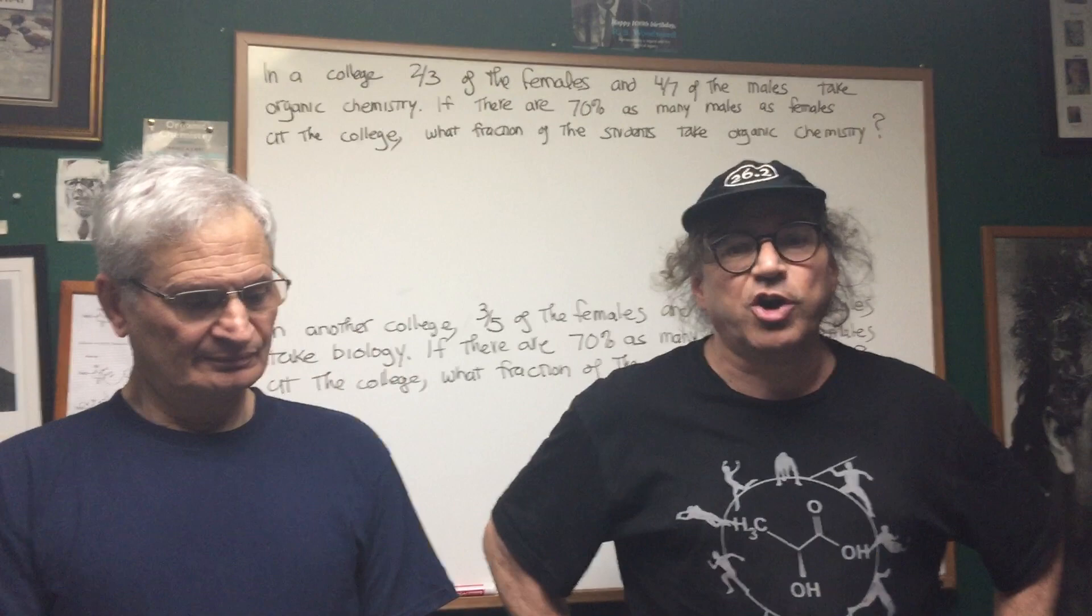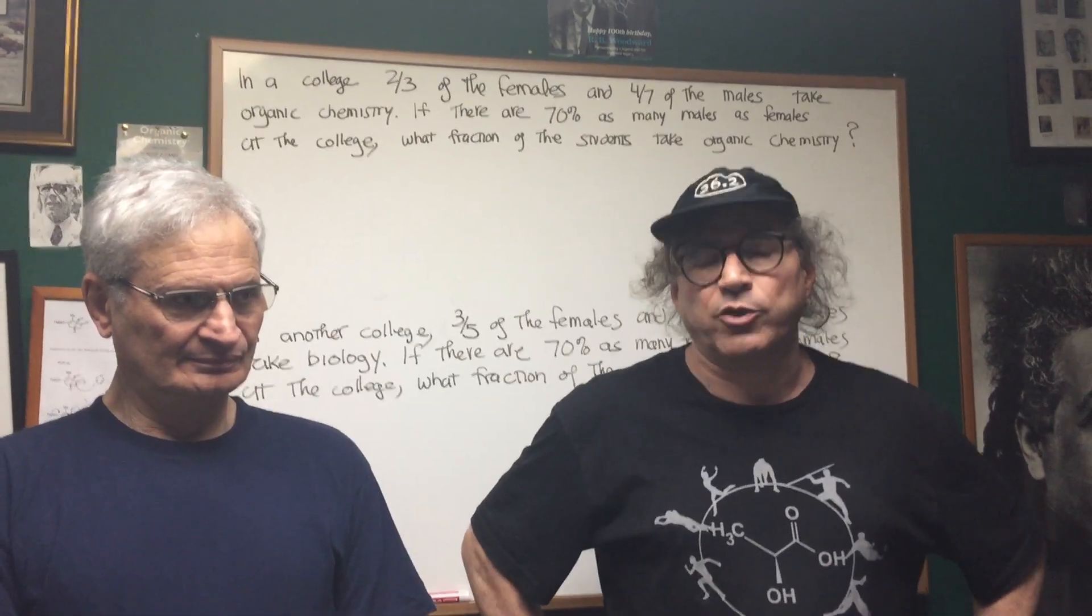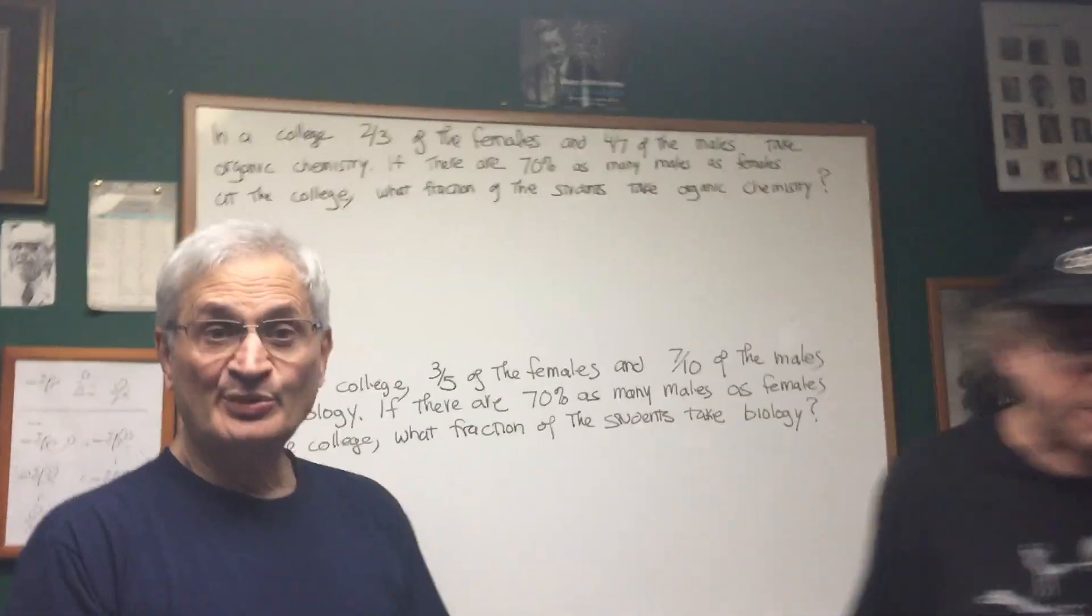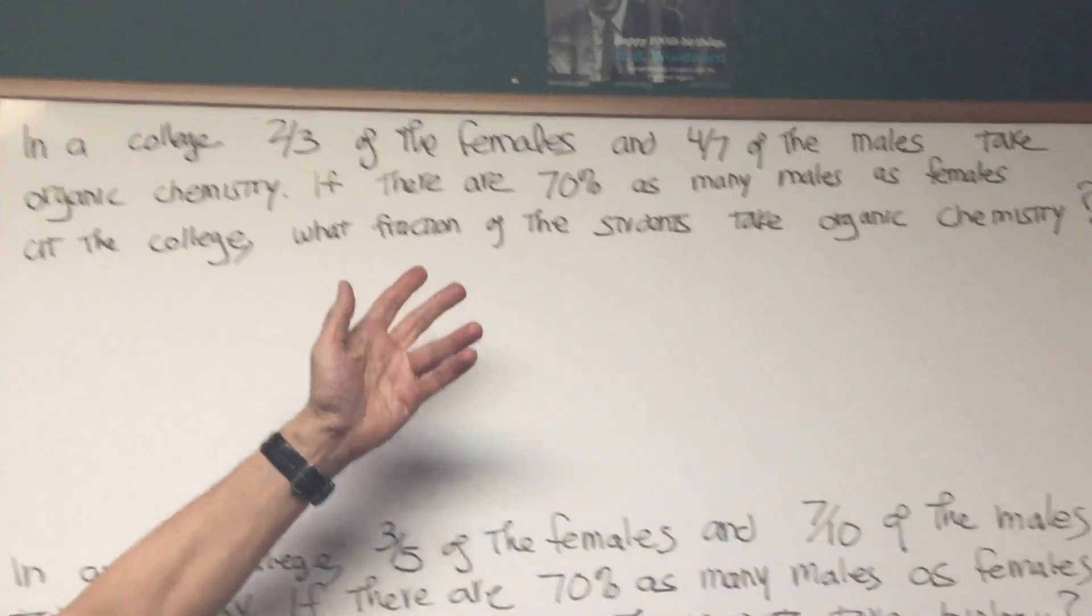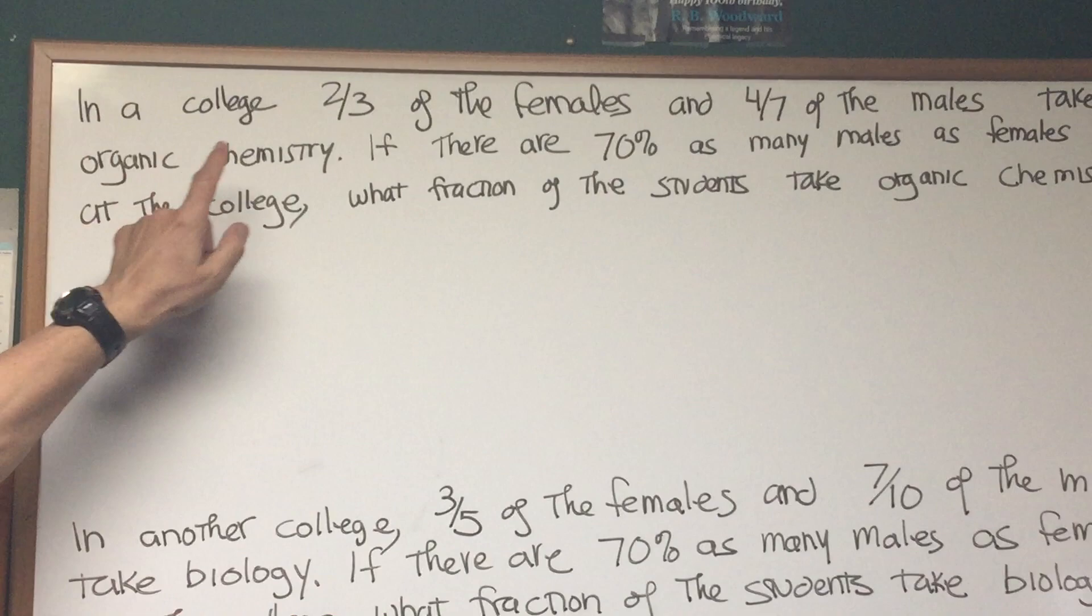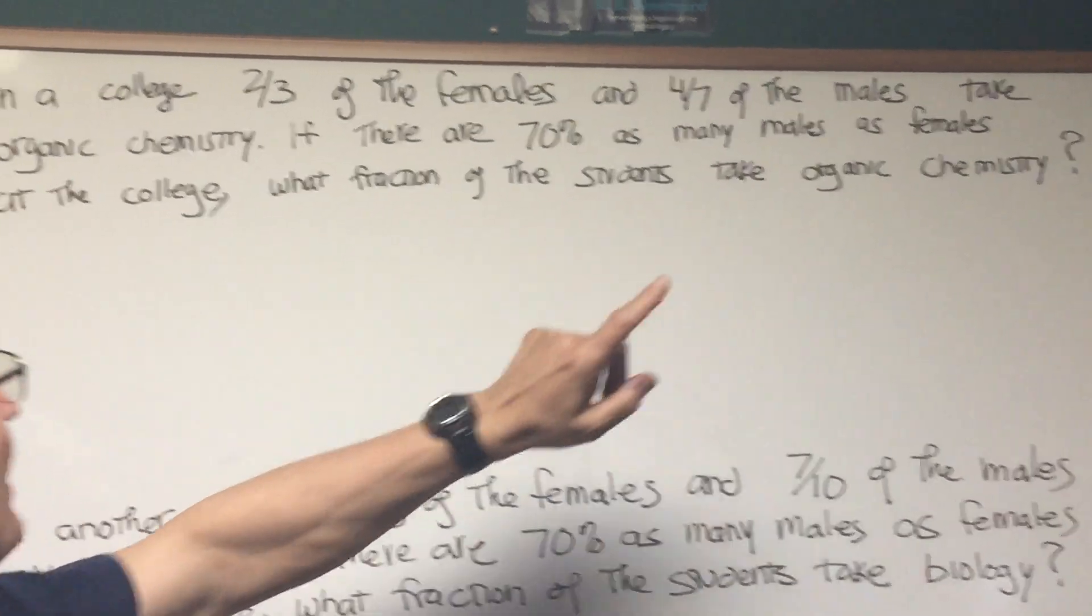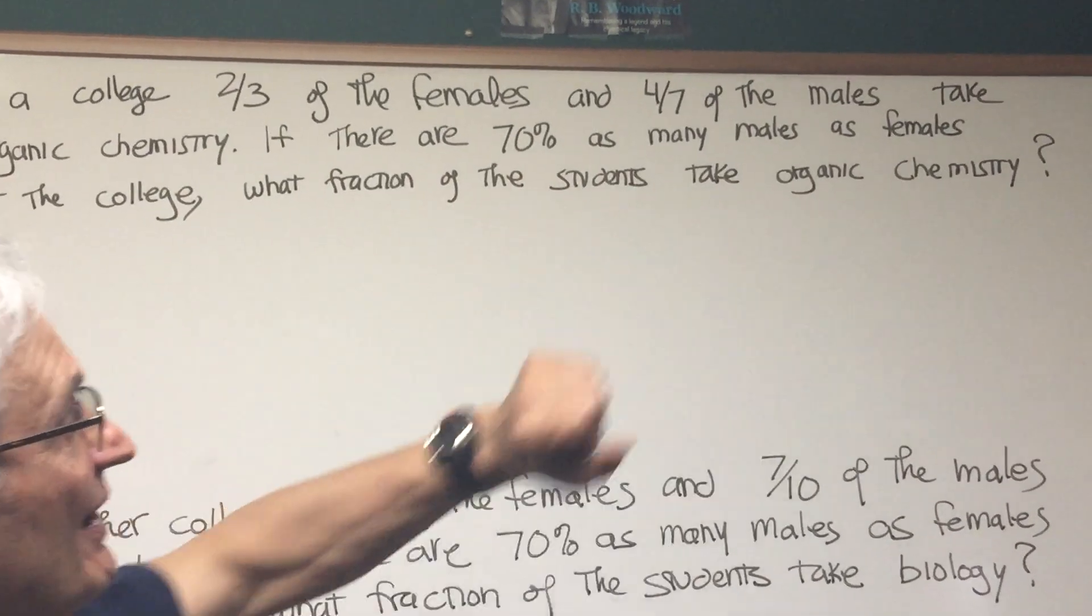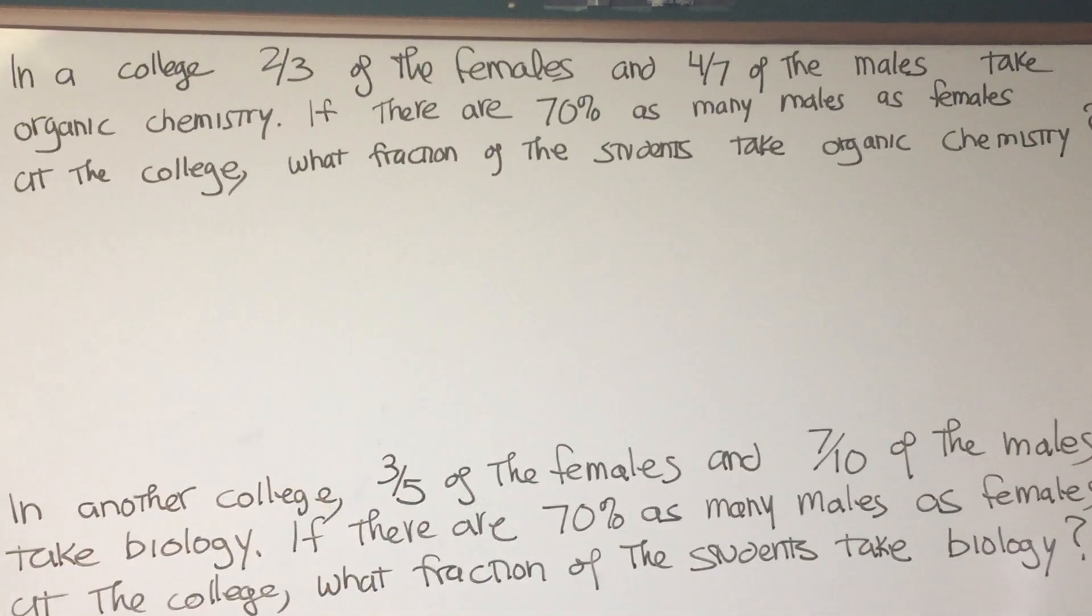This will give you a good idea what to expect on the actual DAT exam and when you practice in the Math Destroyer books. Professor Blois here. This is our two problems on ratios. We're going to do a slightly different approach for each. Let's read the first problem. In a college, two-thirds of the females and four-seventh of the males take organic chemistry. If there are 70% as many males as females at the college, what fraction of the students take organic chemistry?